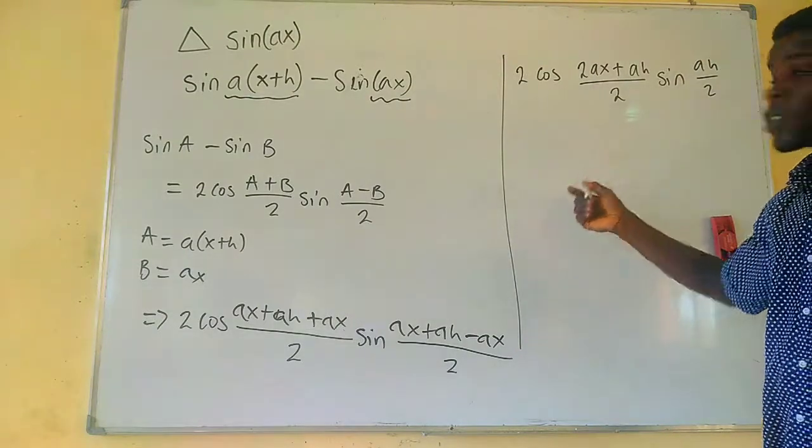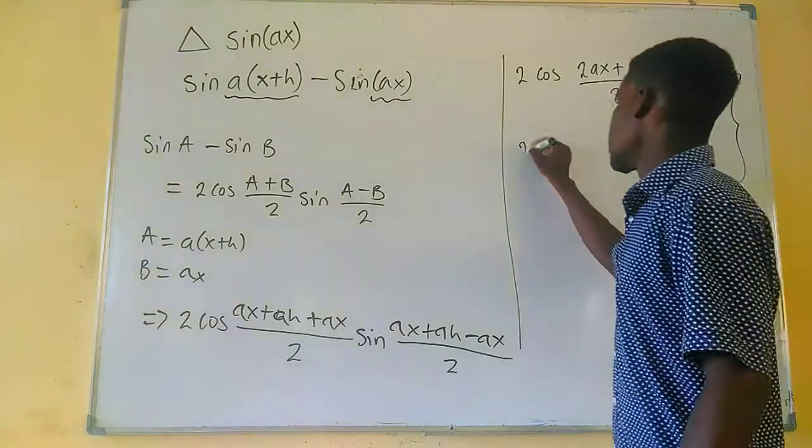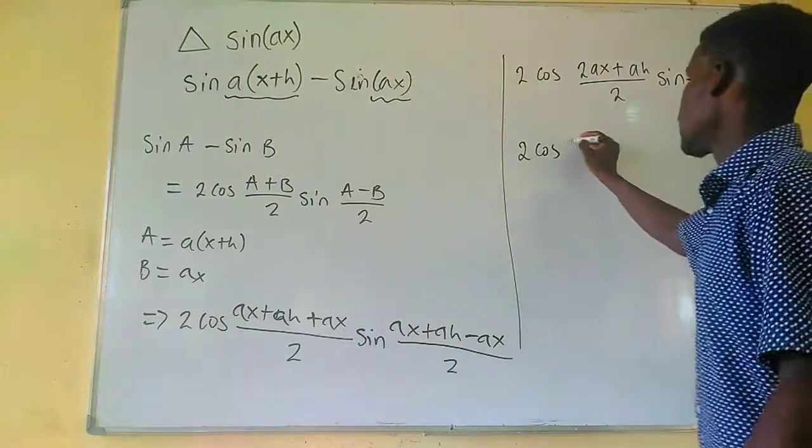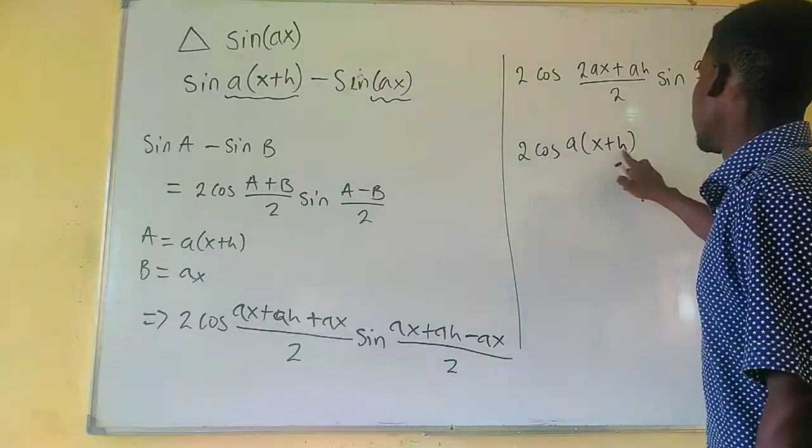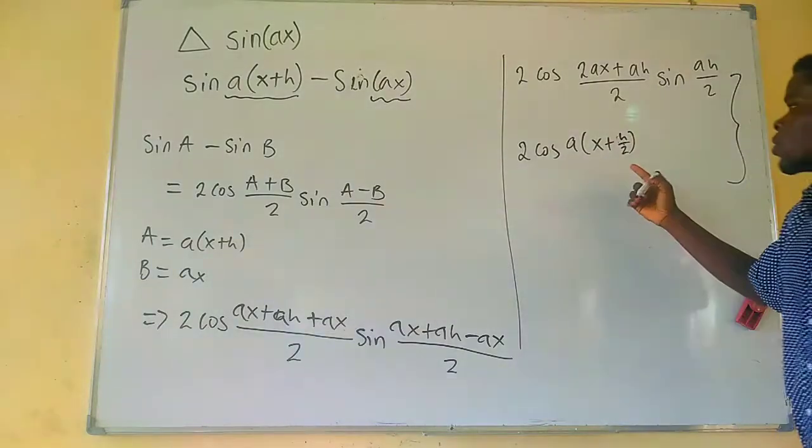Here we can just do some simplifications, but this could be a nice place to stop or better still, we can just enter it. Now this 2 will cancel this. We can have the a outside like this. We can have x plus h over 2, h over 2, like that.